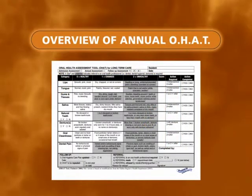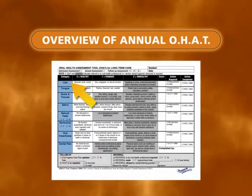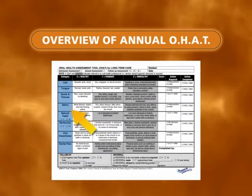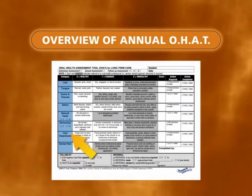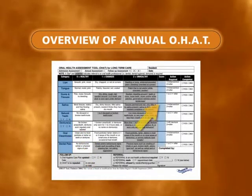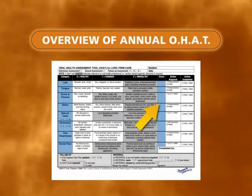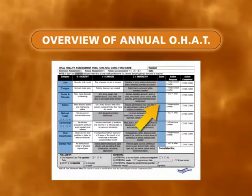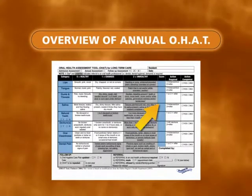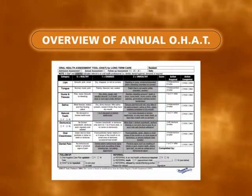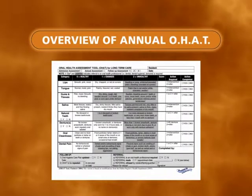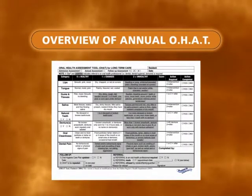It has been demonstrated that care providers can easily learn to follow the eight categories to screen and record oral health status of long-term care residents. Researchers have shown that scoring the eight categories is both valid and reliable. Some centres have added minor modifications to improve how the tool is used.